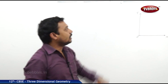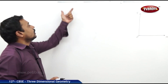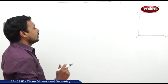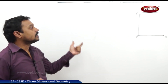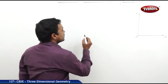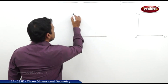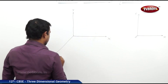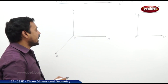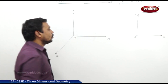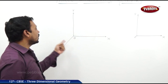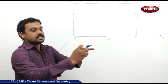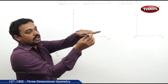That was already studied last year. Now we are going to learn about three-dimensional geometry. Three-dimensional geometry is the geometry determined by three coordinate axes, namely the x-axis, y-axis, and z-axis. The point of intersection of these three axes is the origin, also denoted by O. These three coordinate axes are mutually perpendicular to each other.